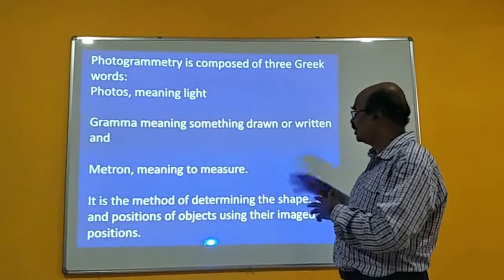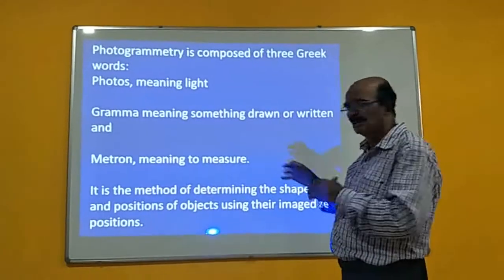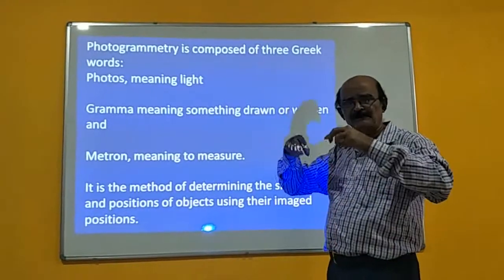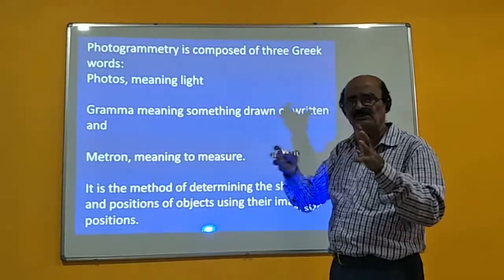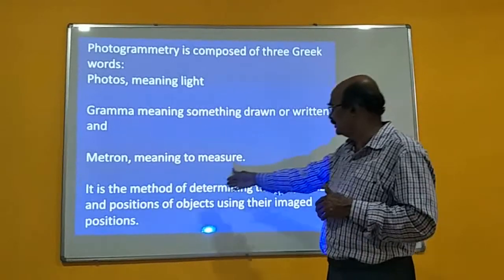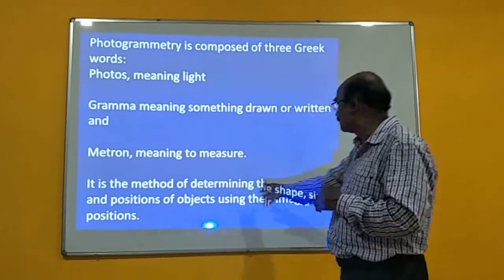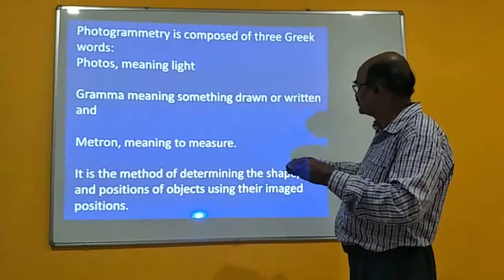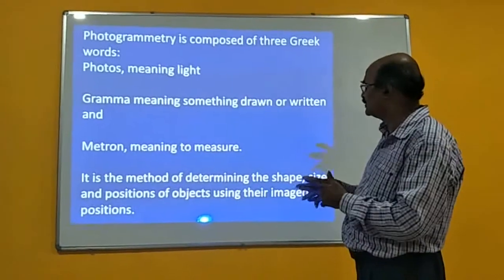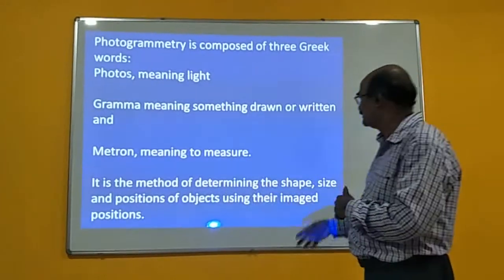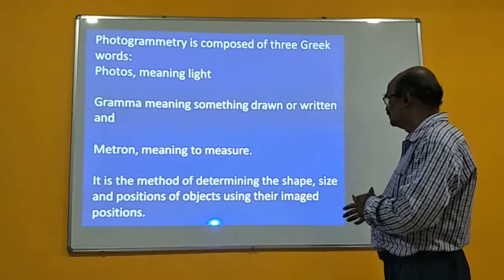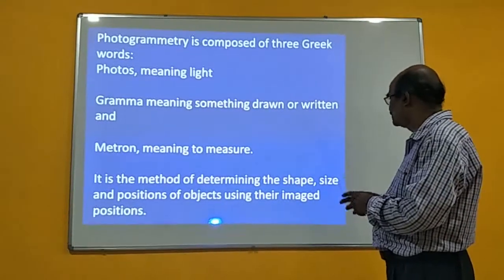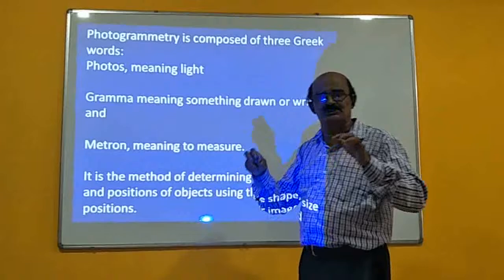'Gramma' meaning something drawn or written — we make use of photographs. By making measurements, we generate topographical maps. 'Metron' meaning to measure — we make quantitative measurements. At the end, it is used to determine the shape, size, and positions of objects using their imaged positions.